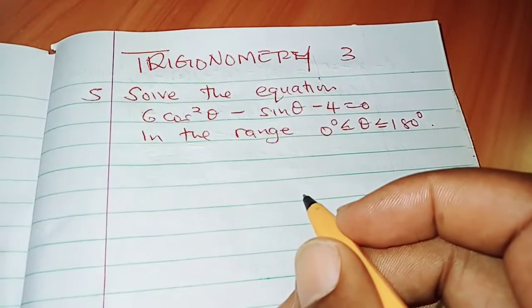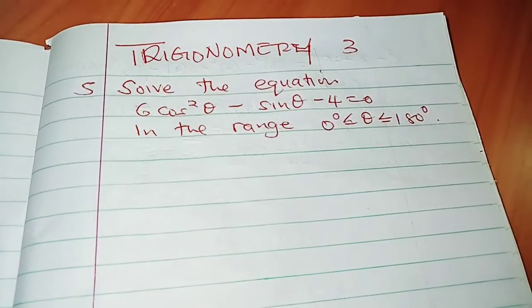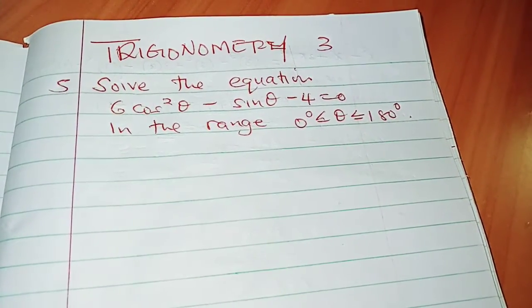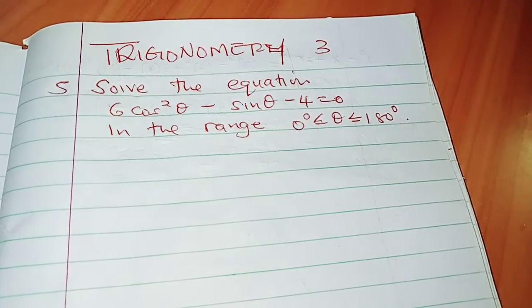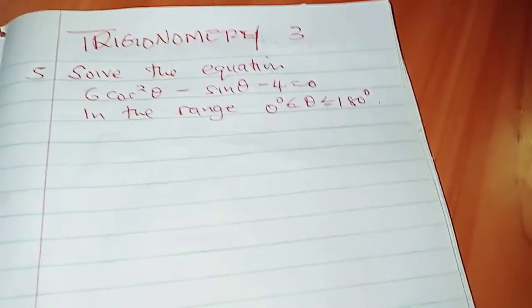Hi viewers, welcome to this video. We are told to solve the equation 6cos²θ - sinθ - 4 = 0 in the range of 0 degrees less than θ less than or equal to 180 degrees. So let's get started here.